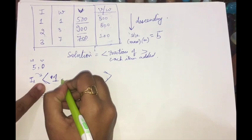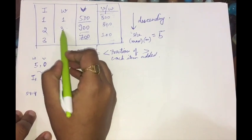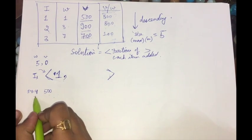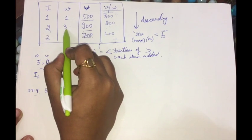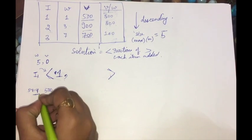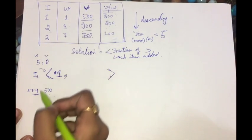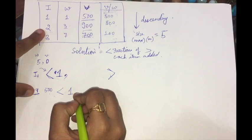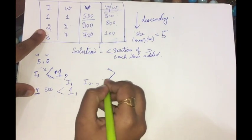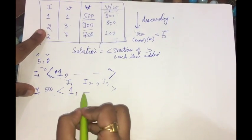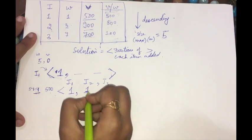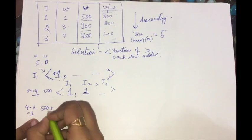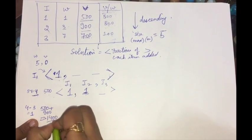Next we consider item 2, which has weight 3. Since the remaining bag capacity is 4 and item 2 weighs only 3, the bag can accommodate the full item. So the entire item 2 goes in. The remaining weight becomes 4 minus 3 equals 1, and the total value becomes 500 plus 900 equals 1400. The fraction for item 2 is also 1.